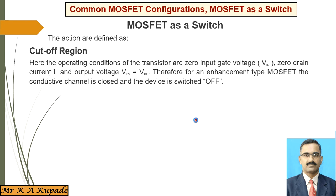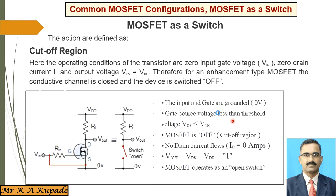This condition is shown whenever the switch is in the off position — that means the switch is open. At that time, VIN is very low, nearly zero, and that is why the switch is open and the transistor is not conducting. This diagram shows exactly how the device acts in this condition.